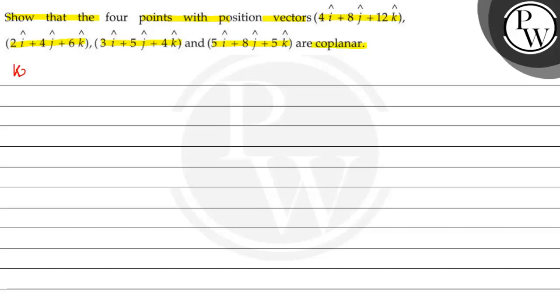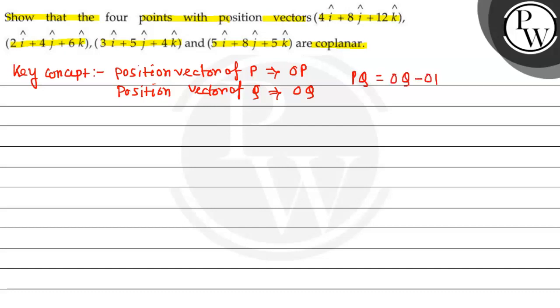First of all, we discuss the key concept: position vector. What is the meaning of position vector? Position vector of P, that is OP. So if you write down position vector of Q, that is OQ. If you find out PQ, then this is written as OQ minus OP.